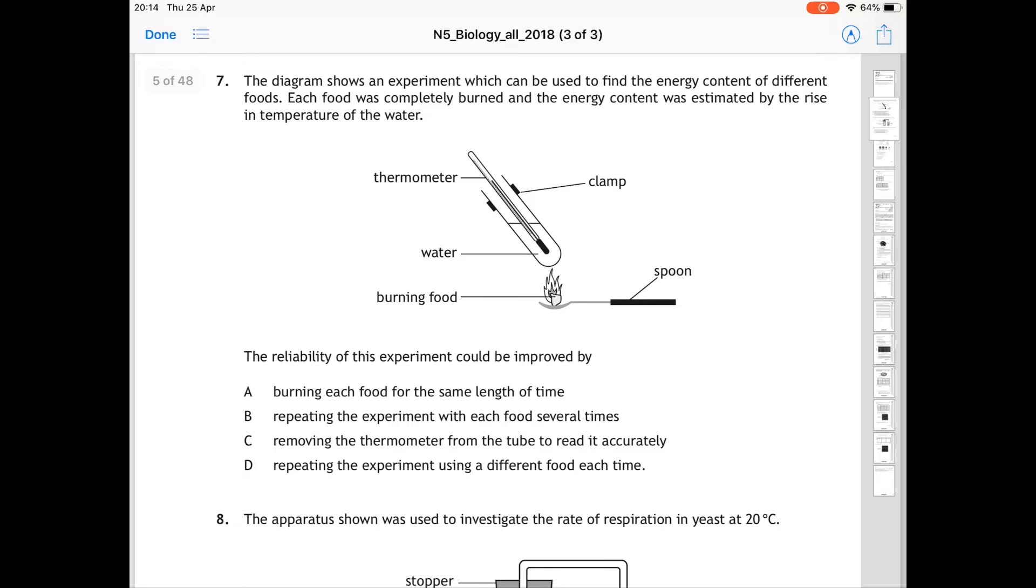Question 7 is an example of experimental design, showing you a diagram of the experiment to find the energy content of different foods. However, the question is asking you how to improve the reliability of this experiment. If you look at the answers A, B, C, and D, you should hopefully be highlighted by B, which says that repeating the experiment with each food several times, because we know in order to increase reliability, you want to repeat the experiment several times, and see what you get for the answer. So 7 is B.